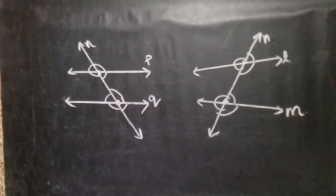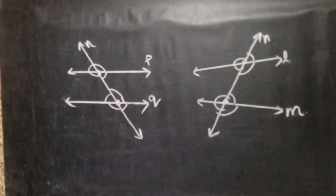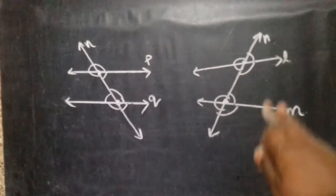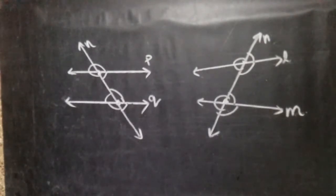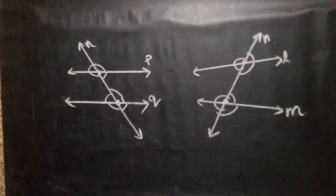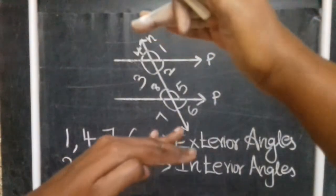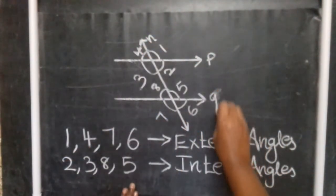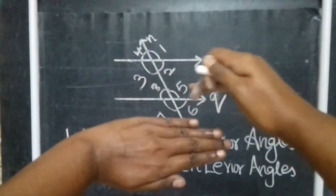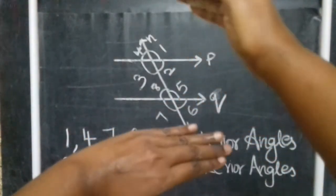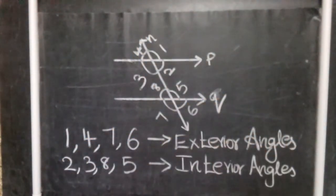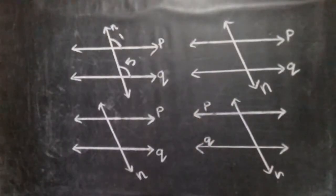So, corresponding angles are angles formed by parallel lines and a transversal. Because they are formed by parallel lines, their measurement is equal. Corresponding angles formed by parallel lines and a transversal are equal in measure. Whereas in the case of non-parallel lines, corresponding angles do not have any relation with each other — their measurements are not necessarily equal.